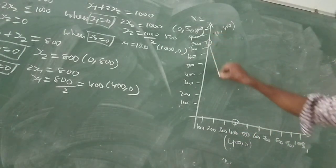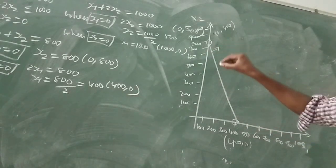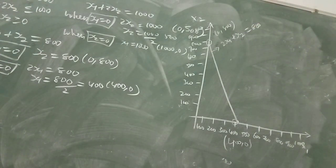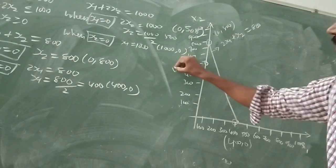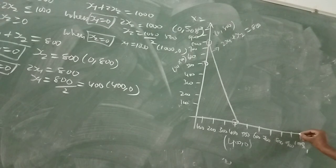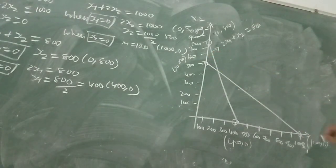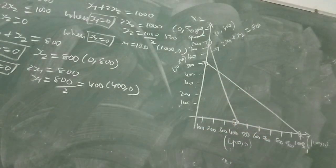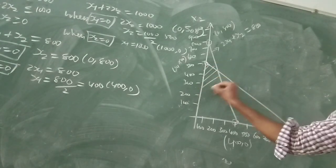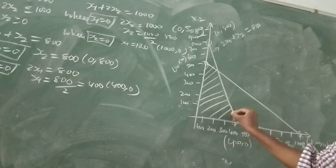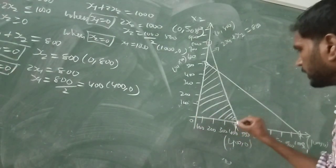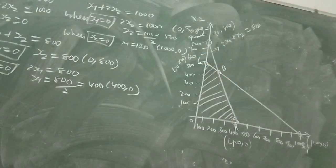So make a straight line. The first equation is 2x1 plus x2 equal to 800. For the second equation, the corner points are (0, 500) and (1000, 0). Again draw a straight line. We draw both lines and then mark the feasible region — below the line — this is the feasible region. So this is the feasible region below the line.